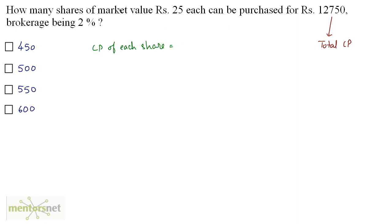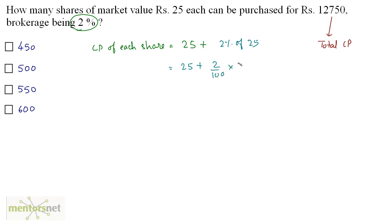The cost price is equal to the market value, that's Rs 25, but we also have a brokerage levied at 2%. So the cost price is 25 plus 2% of 25, which is 25 plus 2/100 × 25. That gives us 25 plus 1/2, which is 25.5. So Rs 25.5 is the cost price of each share.